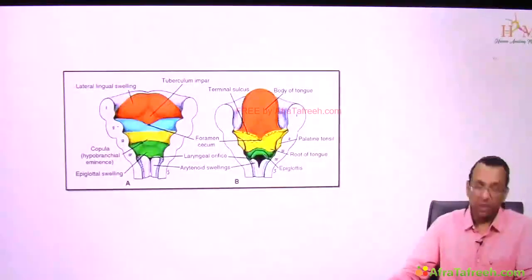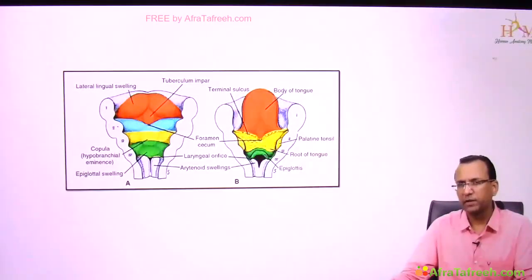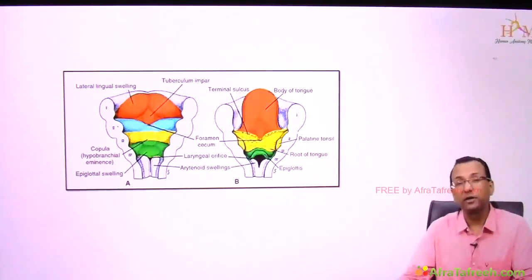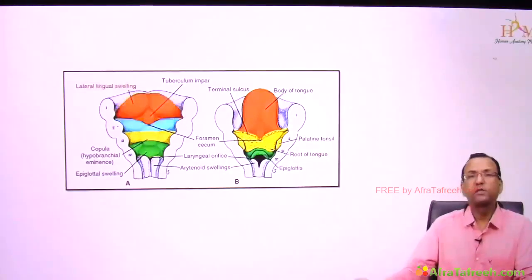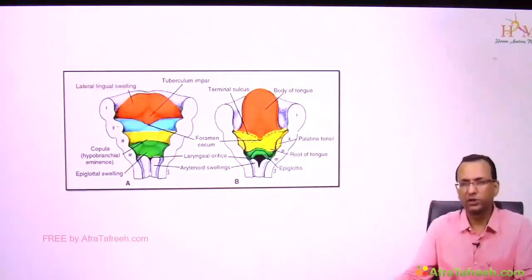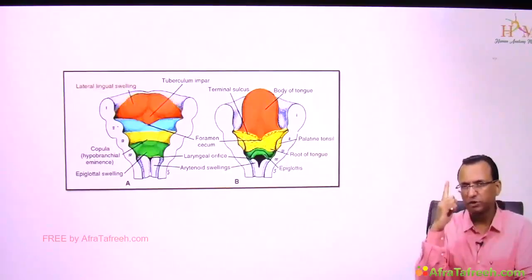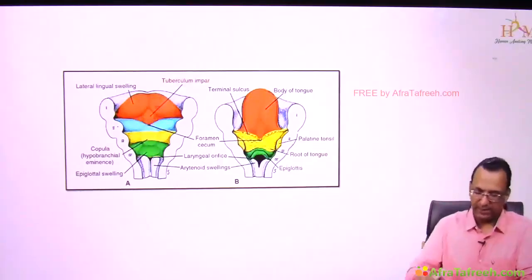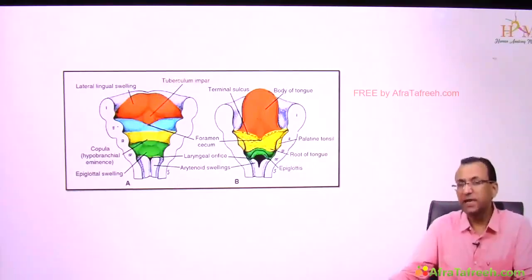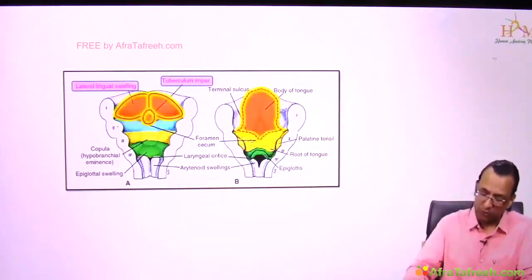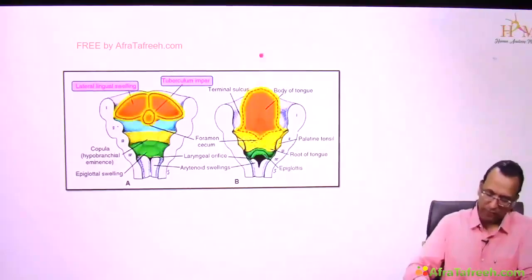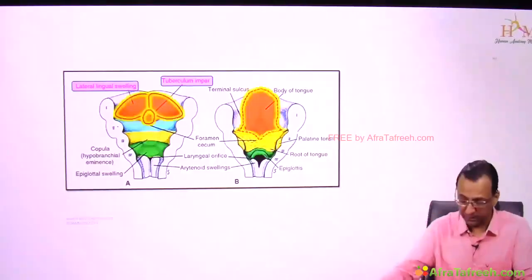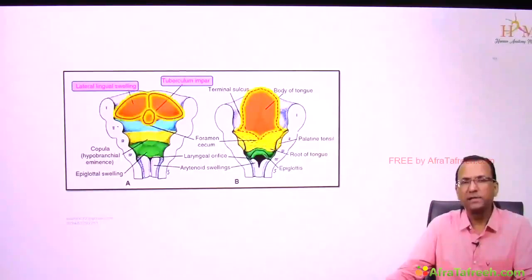This diagram shows the floor of the pharynx where the tongue is developing. There are two lingual swellings at the floor of the pharynx in the first pharyngeal arch. Along with that, there is one tuberculum impar in the midline, also from the first pharyngeal arch. These will form the anterior two-thirds of the tongue — shown in orange color, giving two lingual swellings, one tuberculum impar, and the anterior two-thirds of the tongue.